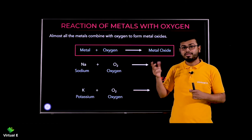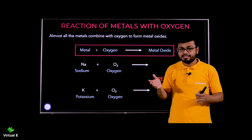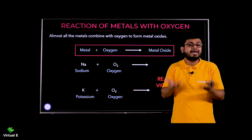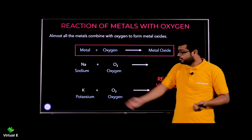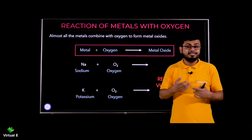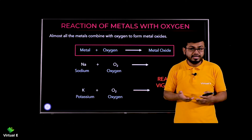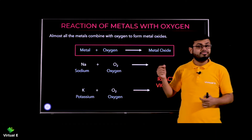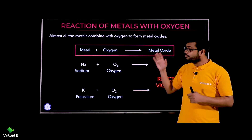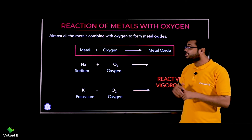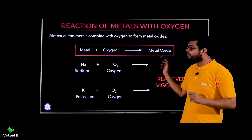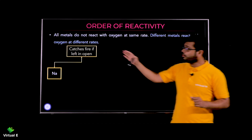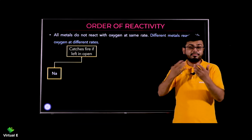So the first metals — magnesium and copper — they normally react. Silver and gold don't react at all. Some metals burn even in the presence of oxygen. Based on this, we have created one reactivity series — that means an order of reactivity. We have seen many metals and how they react.